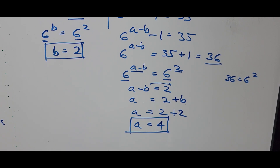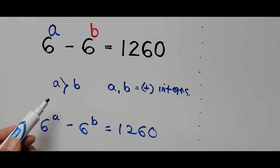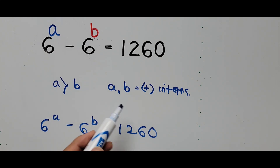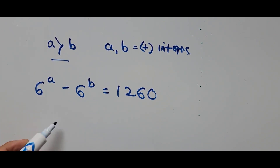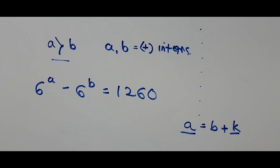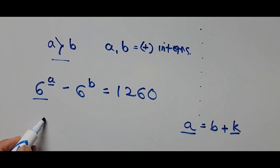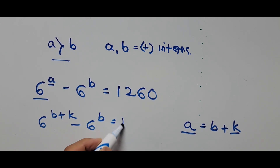Now for the second solution. From the original equation 6 to the power A minus 6 to the power B equals 1260, with A greater than B and both positive integers, we express A in terms of B: A equals B plus K, where K is the positive difference. Substituting, we get 6 to the power B plus K minus 6 to the power B equals 1260.